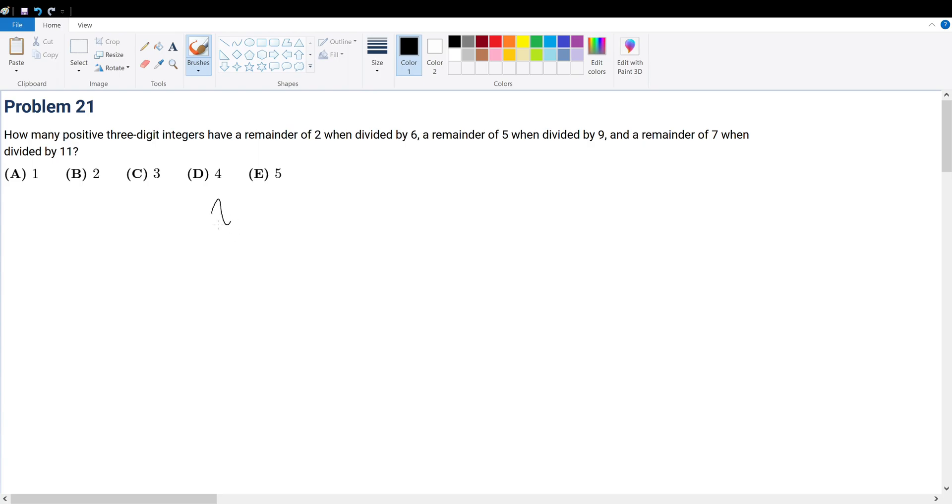Let's say this number is x. It has a remainder of 2, so x is congruent to 2 when divided by 6, and that's represented by mod 6. x is congruent to a remainder of 5 when divided by 9, and x is congruent to a remainder of 7 when divided by 11.